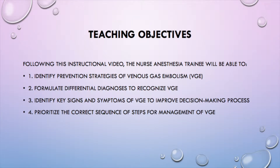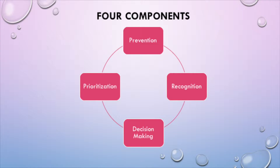Following this instructional video, the nurse anesthesia trainee will be able to identify prevention strategies of venous gas embolism, or VGE; formulate differential diagnoses to recognize VGE; identify key signs and symptoms of VGE to improve decision-making processes; and prioritize the correct sequence of steps for management of VGE. This video focuses on identifying prevention strategies, recognition, decision-making, and prioritization during a VGE.